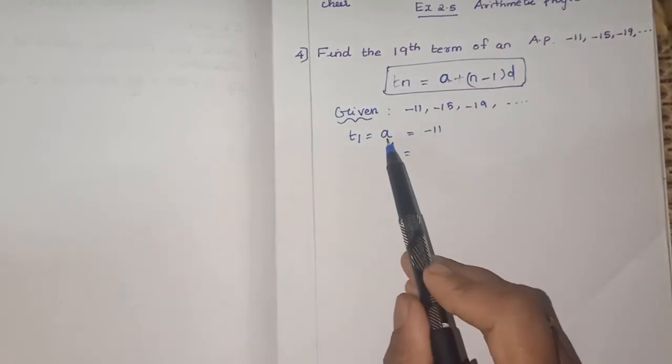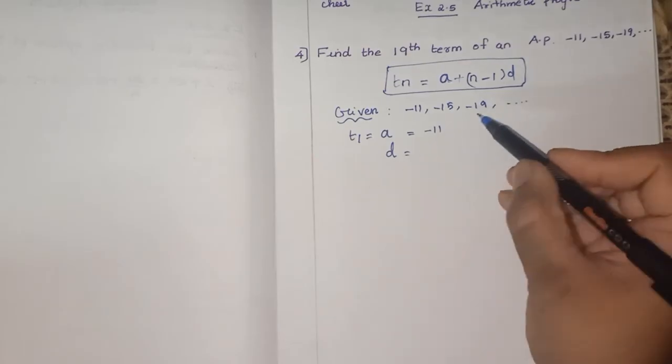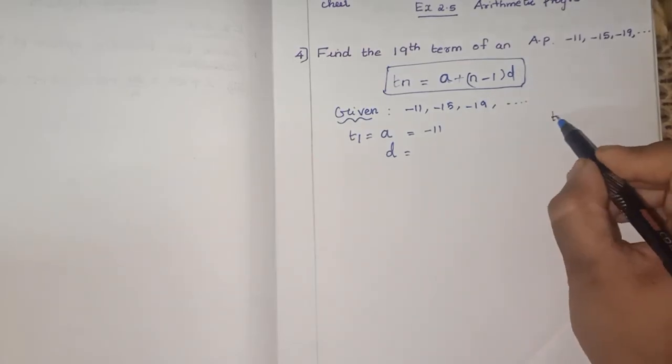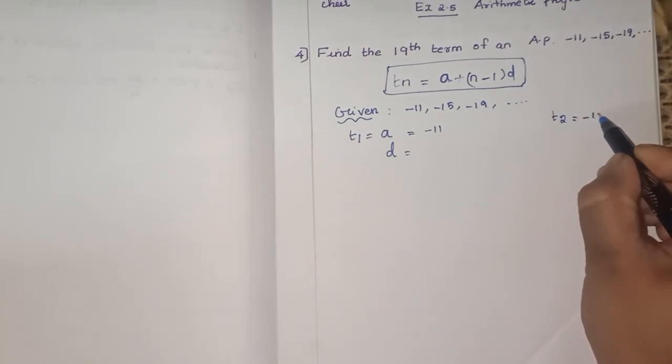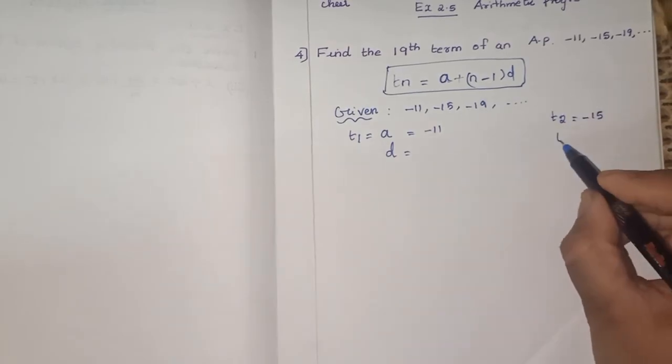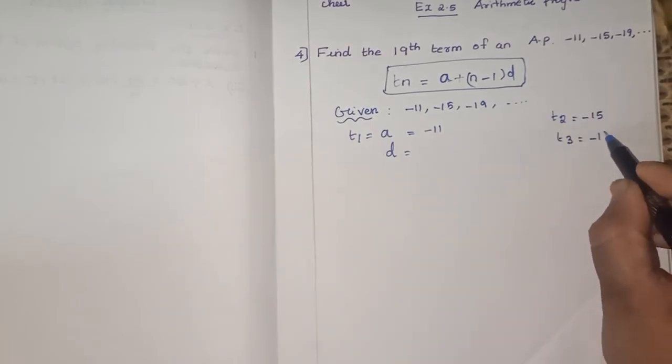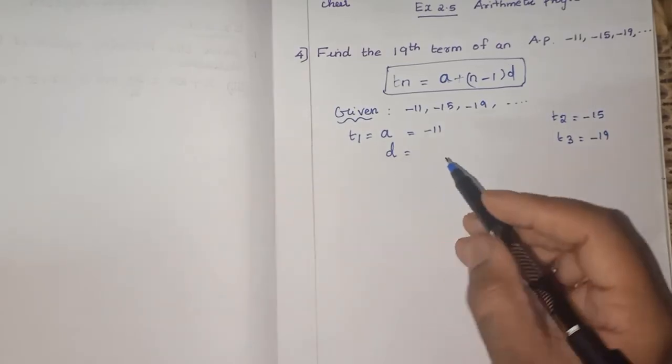So what is T2 here? T2 is minus 15. Second term. What is T3 here? Minus 19. So how will you find the common difference?